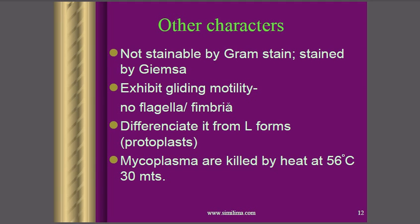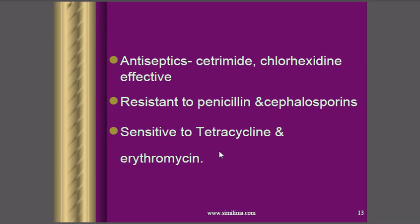Mycoplasma exhibit gliding motility — they generally do not have flagella or fimbriae, but can show gliding motility using small extensions of the cell membrane, allowing them to slide laterally from one place to another. Mycoplasma are killed by heat above 55–56 degrees Celsius for approximately 30 minutes, as they lack a cell wall. They are resistant to penicillin and cephalosporins but sensitive to tetracycline and erythromycin.